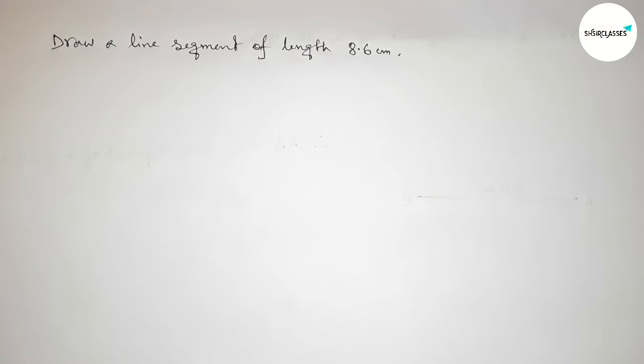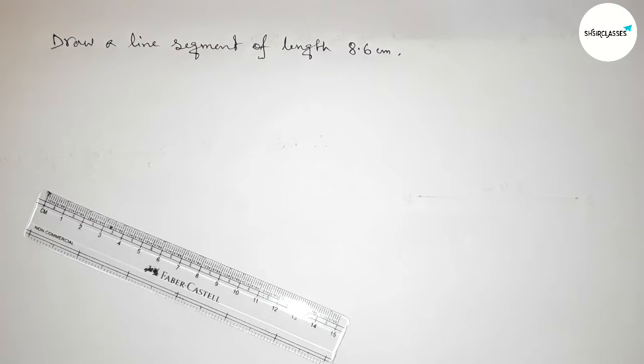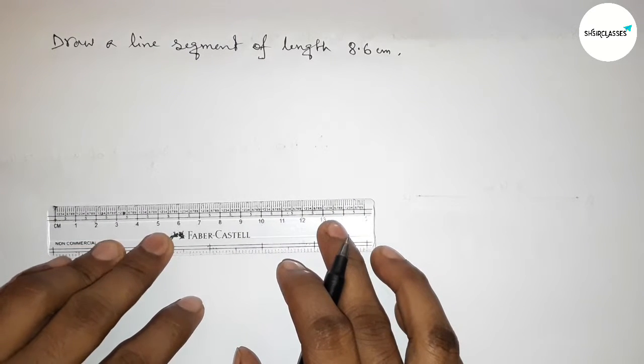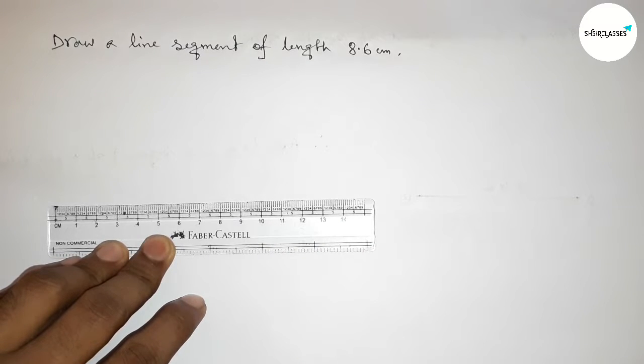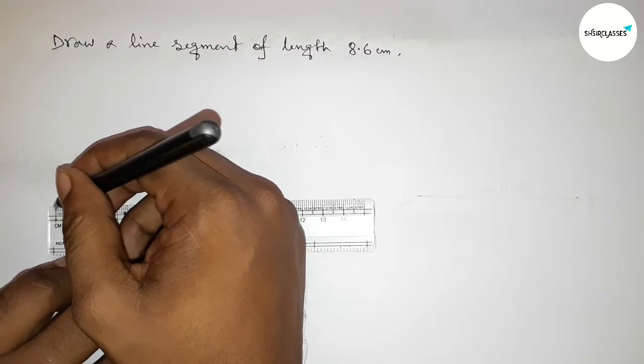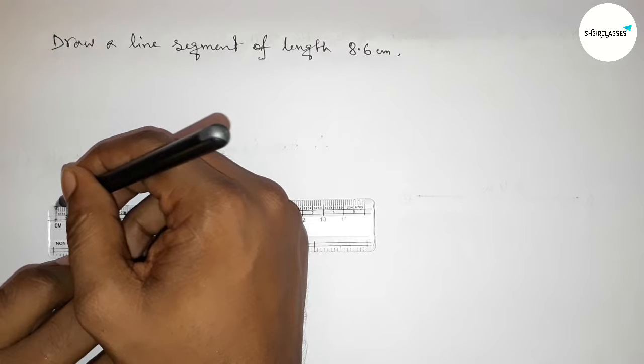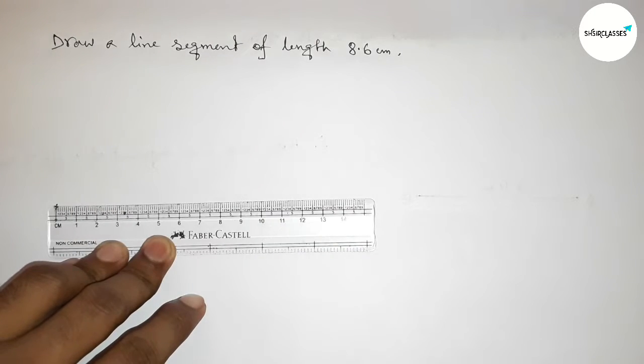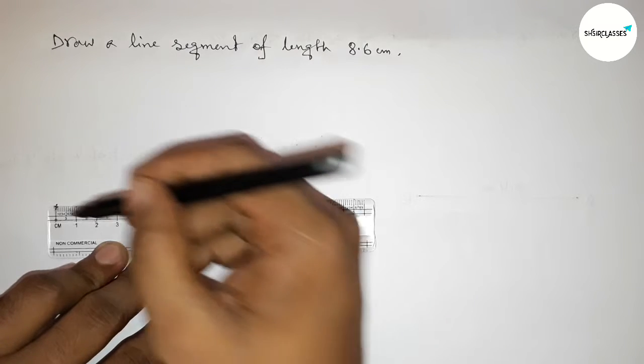start the video. First of all, with the help of the scale, putting the scale here perfectly, then measure the length 8.6 centimeters. So first counting - this is the starting zero, so first marking here zero, then counting.